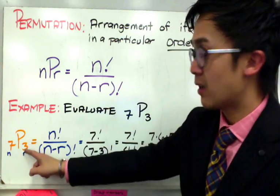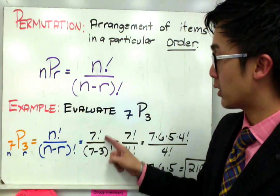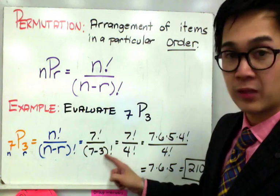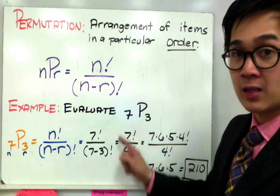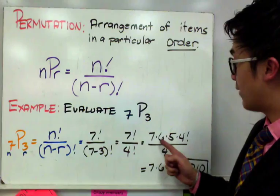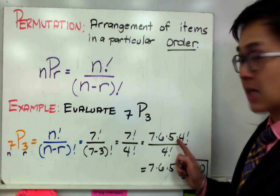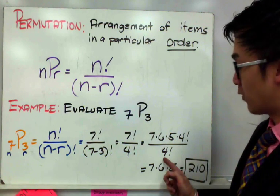7P3 will be 7 factorial all over 7 minus 3 factorial. 7 minus 3 is 4 and by evaluating this number, we'll have 7 times 6 times 5 times 4 factorial all over 4 factorial.